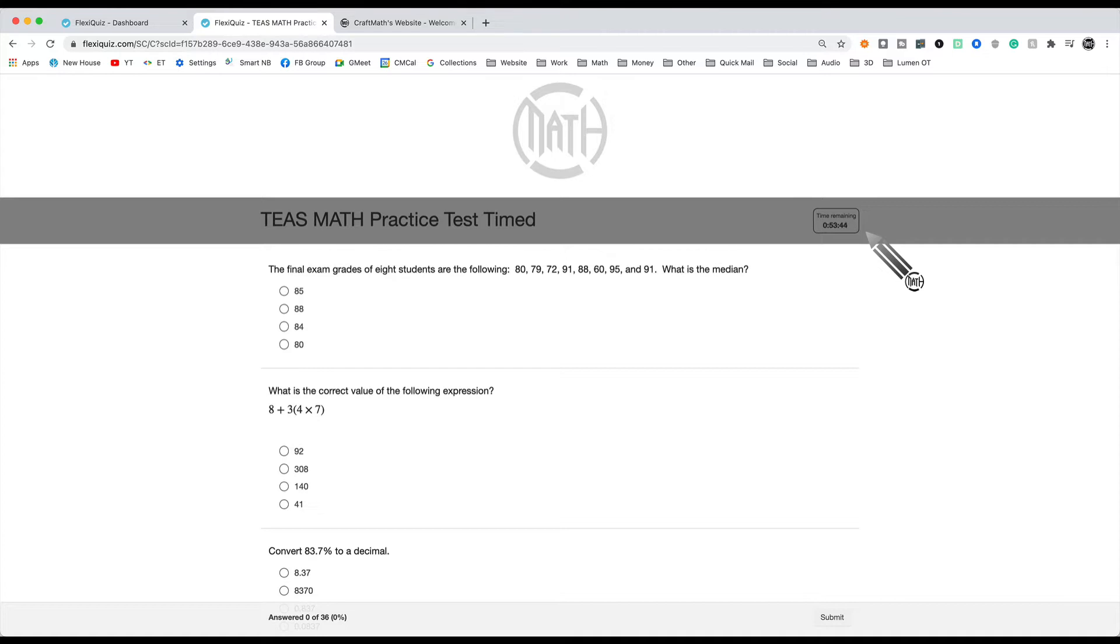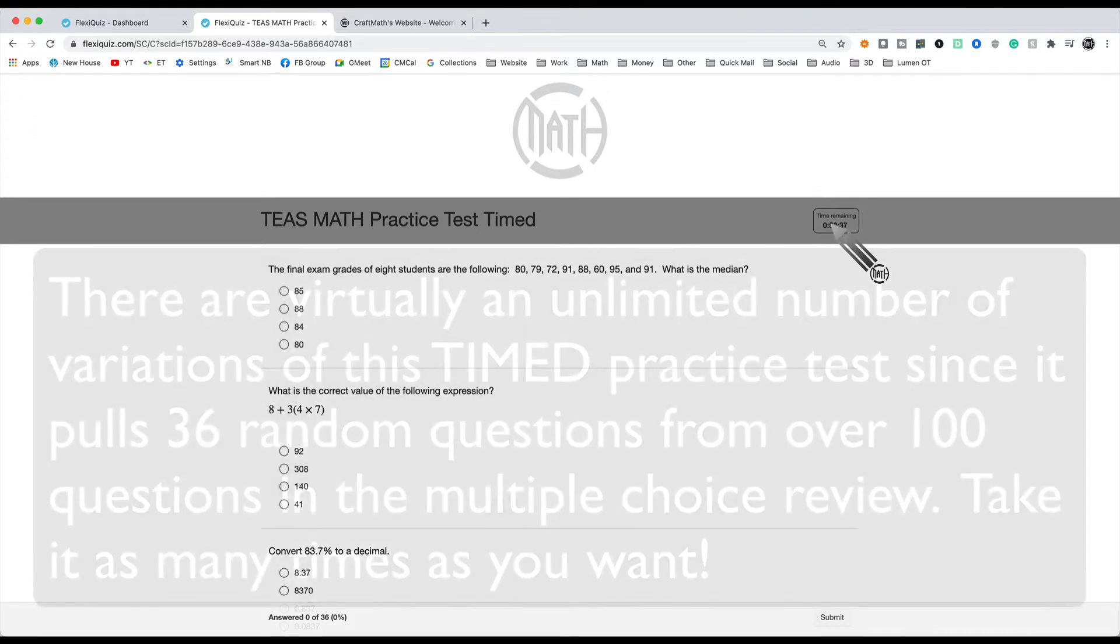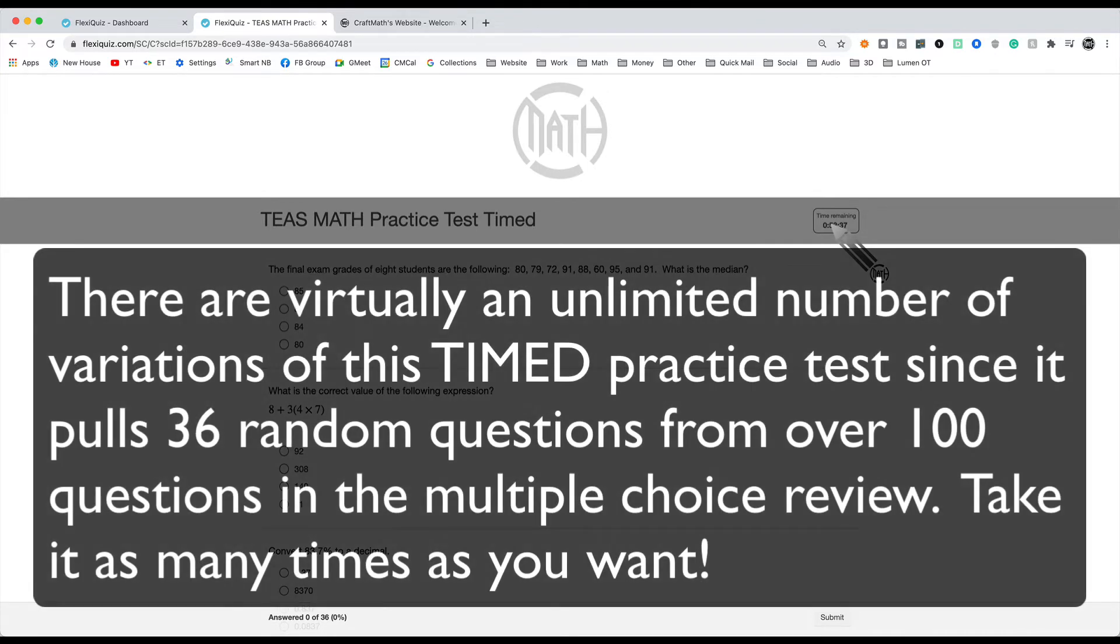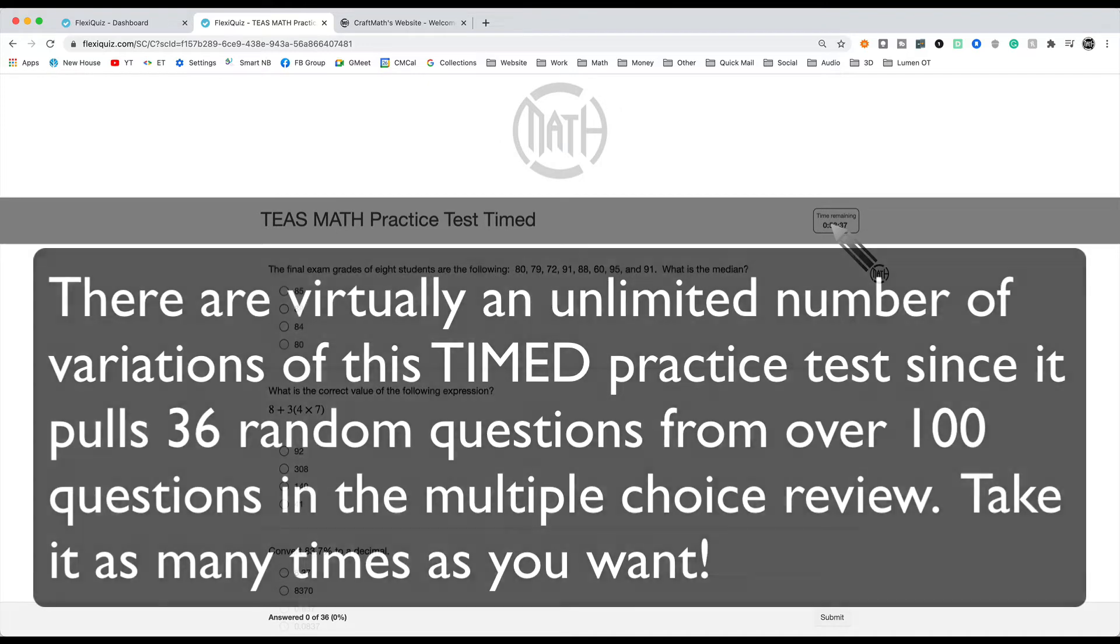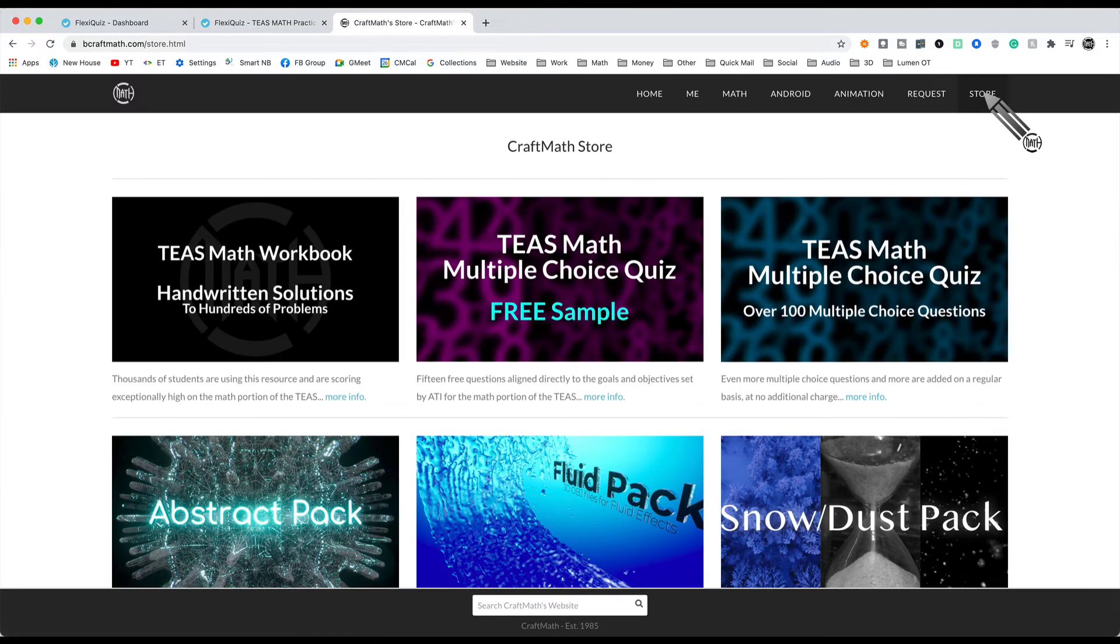54 minutes to do those 36 questions. This will simulate that actual TEAS test. You know, it's multiple choice. Try to do all 36 in the 54 minutes. Now, you may be wondering, where can you get this multiple choice review? Again, it includes over 100 questions all in one set, and then you also now get that timed test. Over here at my store, www.bonafidemath.com/store, it's this one right here. I encourage you to try the free sample first.